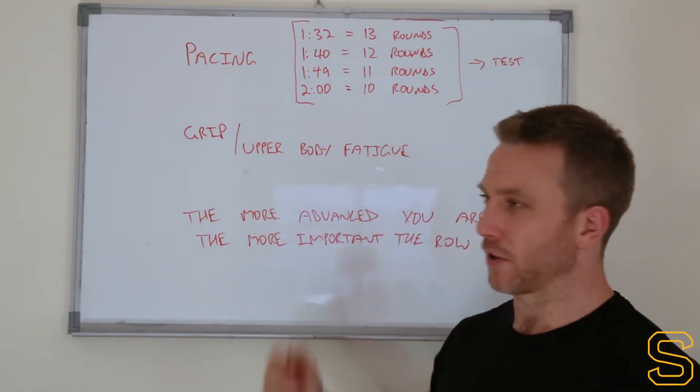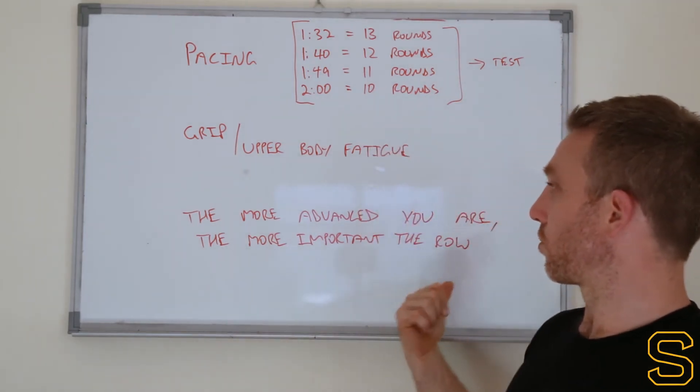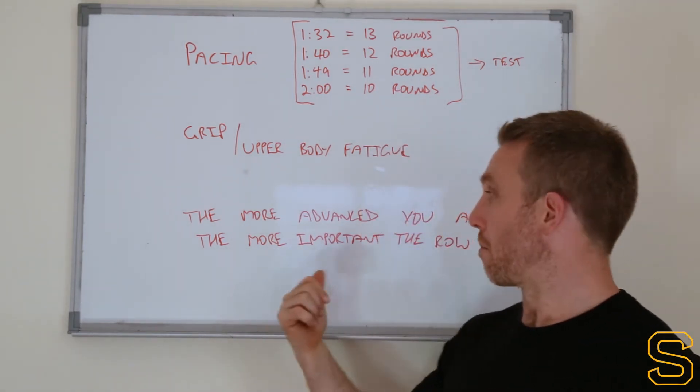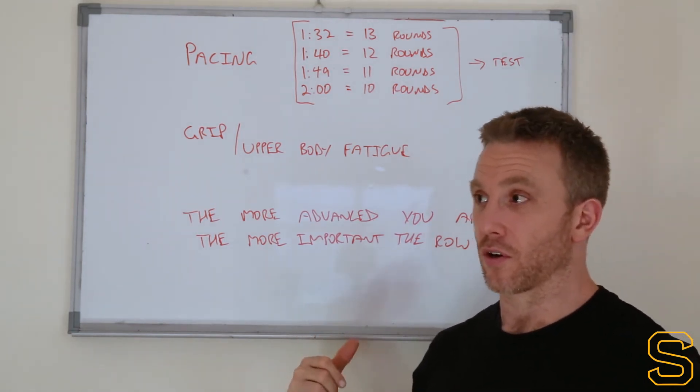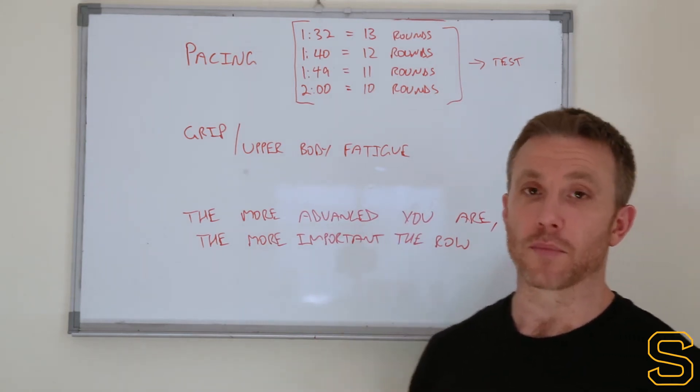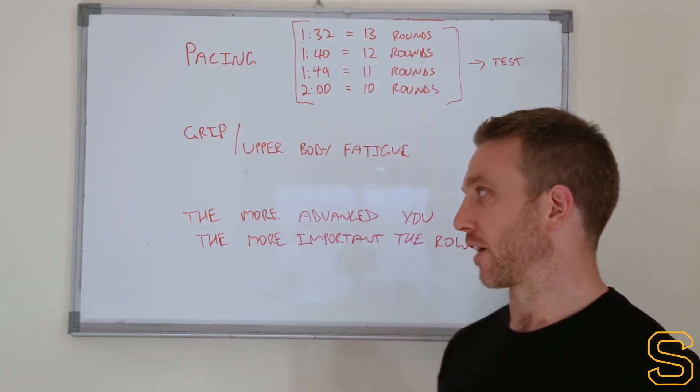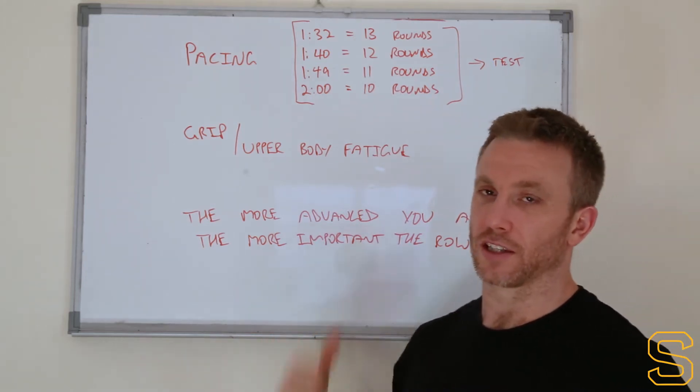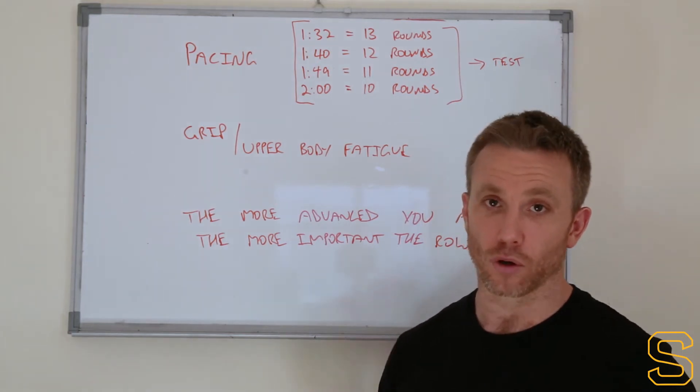My last point here before I move on to the next whiteboard is the more advanced you are of an athlete, the more important the row is in this workout. So the more advanced you get, the more likely it is you're going to definitely do unbroken reps and pretty fast reps on the toes-to-bar and on the dumbbell. And then it comes down to how quickly you can do that row and you need to know what pace you can sustain throughout the whole 20 minutes.